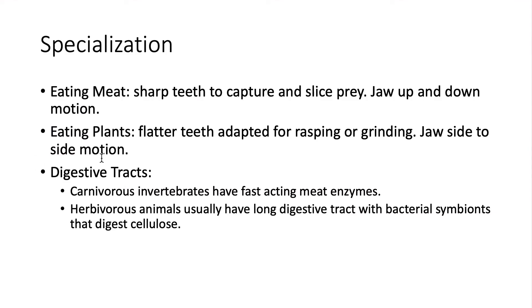What about some specialization? Eating meat requires sharp teeth to capture and slice prey, with a jaw up-and-down motion. Looking at anatomy and fossils, the jaw moves in an up-and-down, superior-inferior plane. Eating plants, you're going to have flat teeth adapted for rasping or grinding. You grind that against two surfaces to break it up because plants contain cellulose, which is very hard and we actually don't digest it. If you want to cure hunger in the world, find a way to digest cellulose and you could just walk out to your front yard and start eating grass.